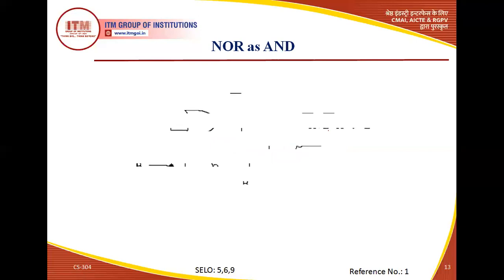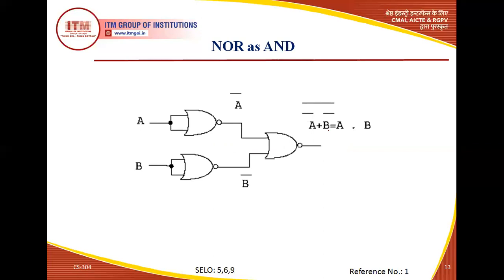To use NOR as an AND gate we use three NOR gates, similar to NAND-to-OR. The first NOR gate is used as a NOT gate with input A, inverting it; the second gate inverts input B. Both inverted outputs are applied to the third NOR gate, giving (Ā+B̄)̄. Applying De Morgan's theorem: (Ā+B̄)̄ = A·B. So we get the AND gate output using three NOR gates.